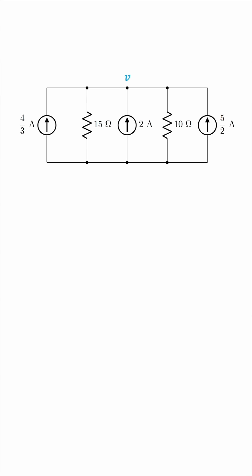We have current sources in parallel as well as resistors in parallel, so we can combine those and have this simplified circuit. Because this is all one node, the voltage V is still retained in the simplified circuit.